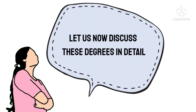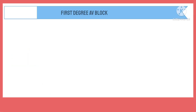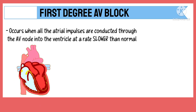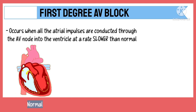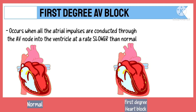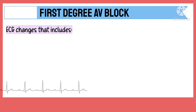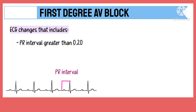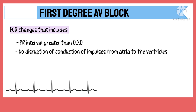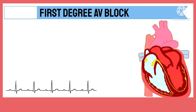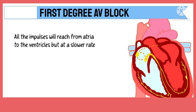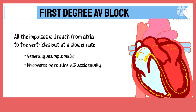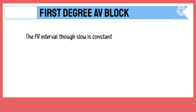1st degree AV block occurs when all the atrial impulses are conducted through the AV node into the ventricles at a rate slower than normal. It is defined by ECG changes that include a PR interval of greater than 0.20 seconds without disruption of conduction of impulses from the atria to the ventricles. It means all impulses will reach the ventricles but at a slower rate. This is generally asymptomatic and discovered only on routine ECG. The PR interval, though slow, is constant.